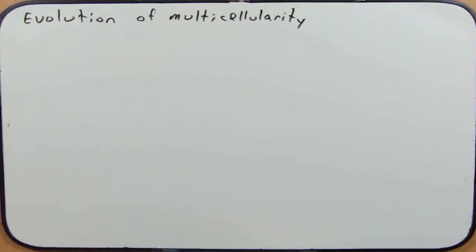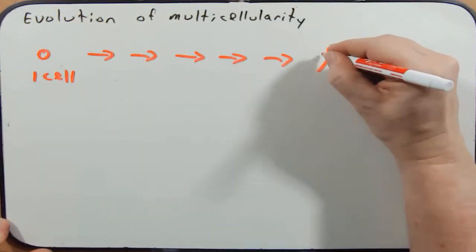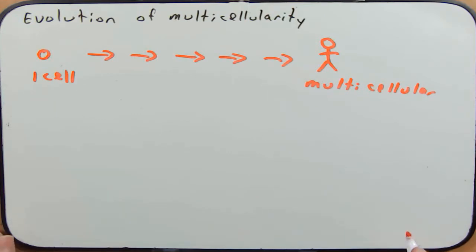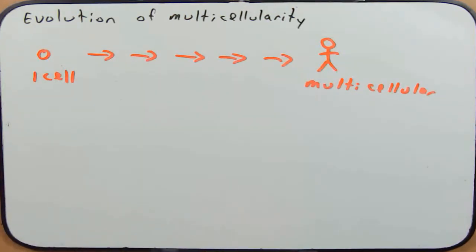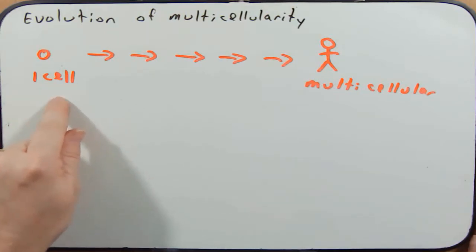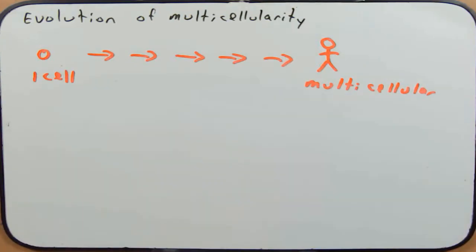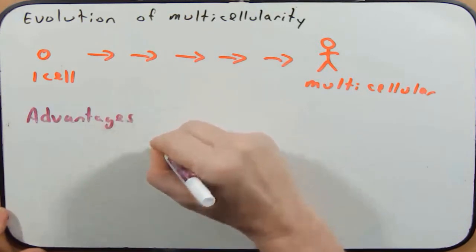Now I want to talk more about multicellularity — we mentioned this in a previous video podcast when discussing the rise of eukaryotes and protists. Going from a single cell to a multicellular organism is one of the most major evolutionary transitions. It certainly didn't happen overnight or in a single generation — many mutations had to accumulate within a population to allow cells to work together and ultimately specialize. However, this has happened multiple times throughout evolution.